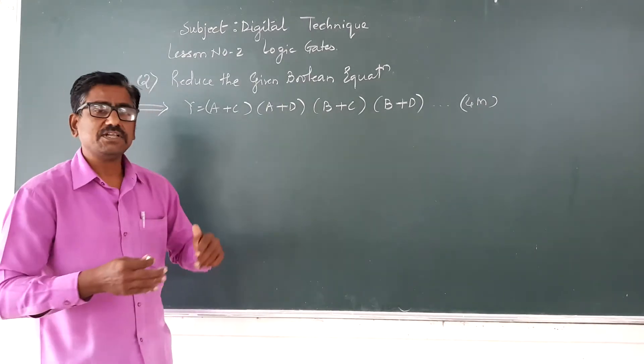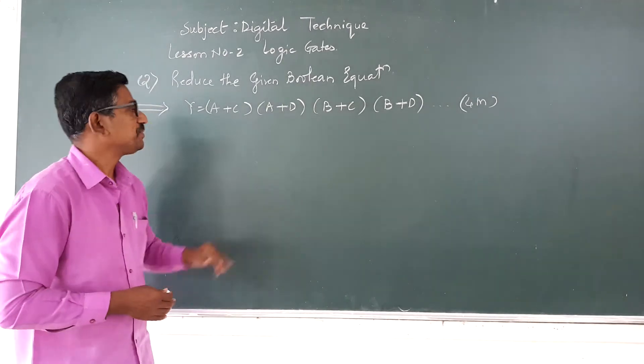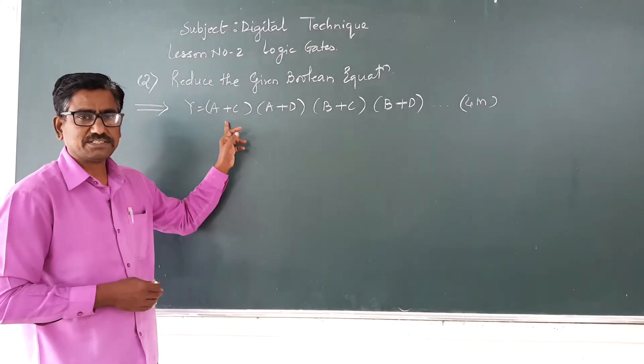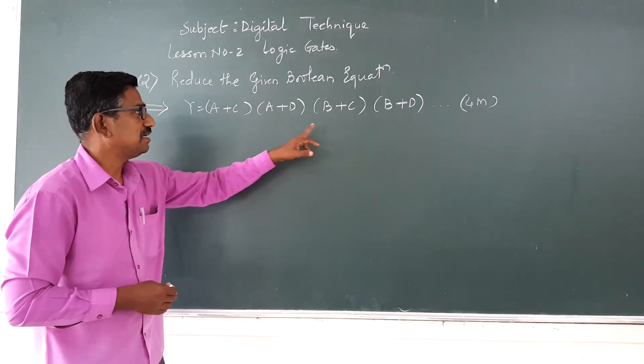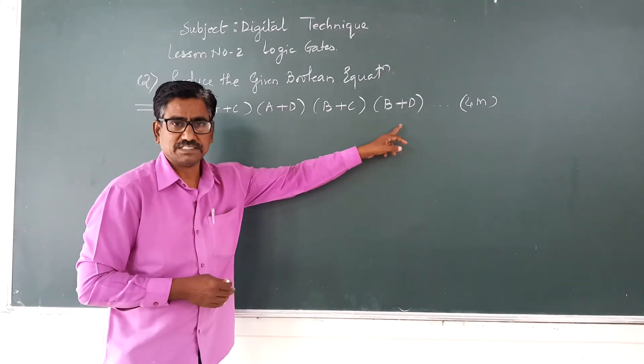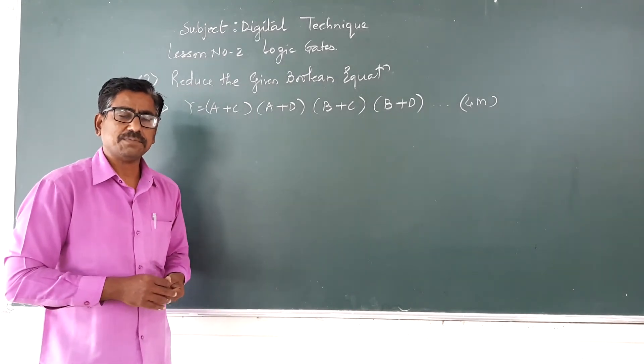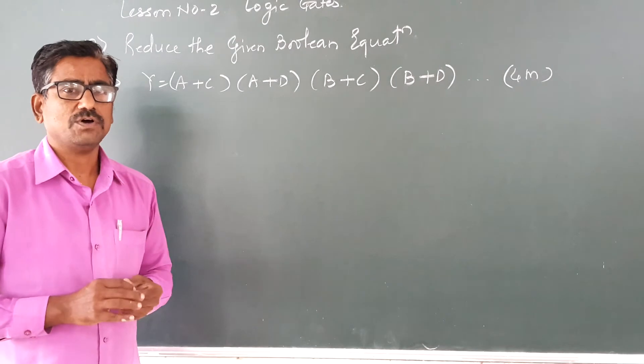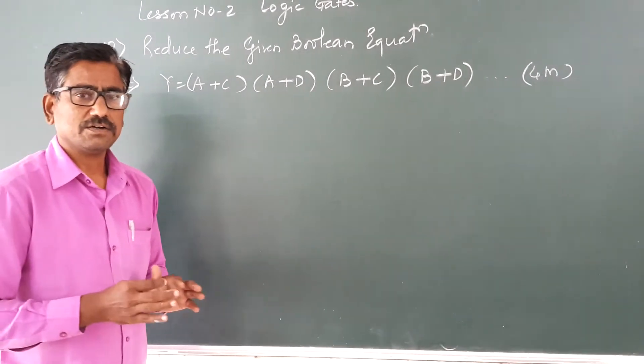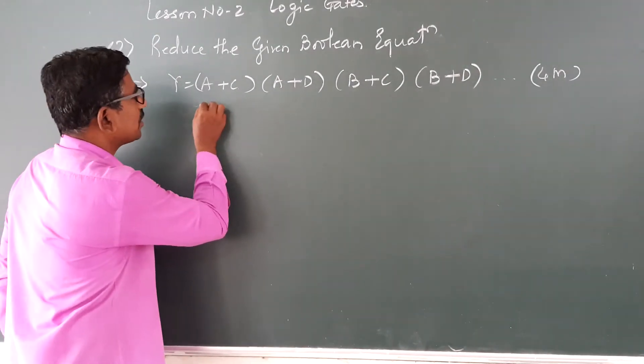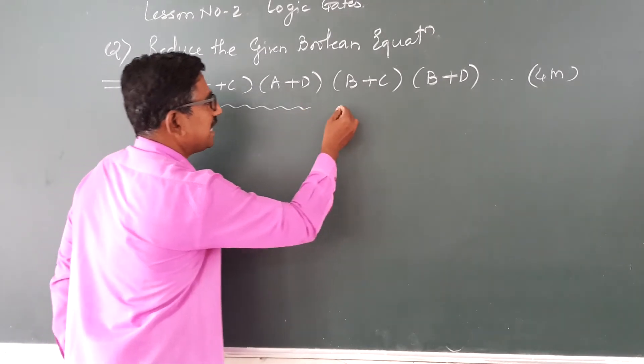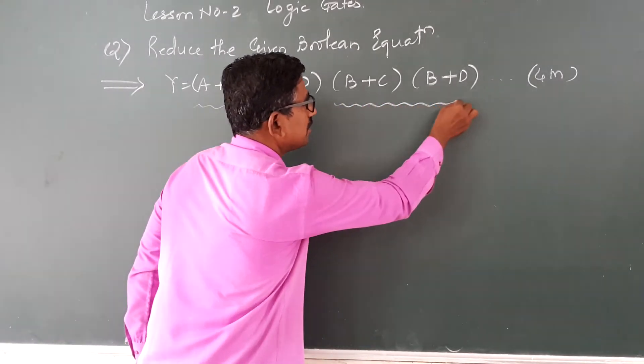So first, what is my given equation? Just see my given equation. That is, y equals (a+c)(a+b)(b+c)(b+c̄). Here, there are 4 brackets given in my equation. Now, what I will do? First, I will solve for these 2 brackets and then solve for these 2 brackets.